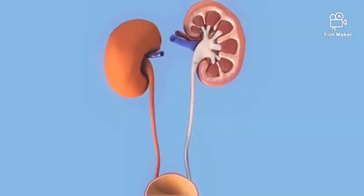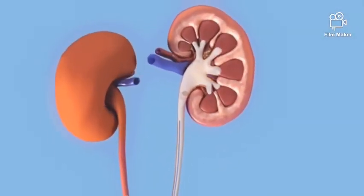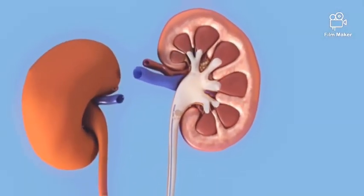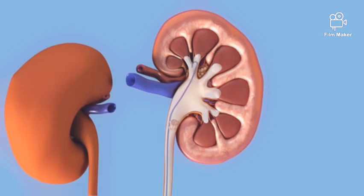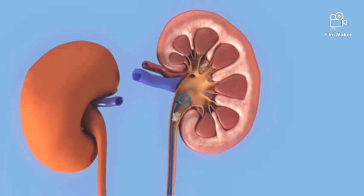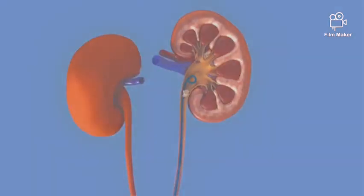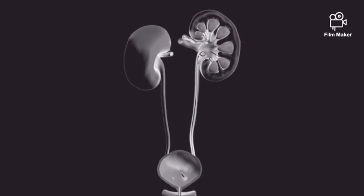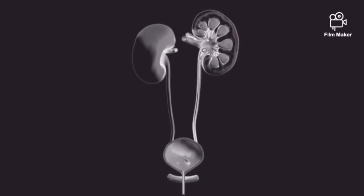A so-called guide wire is introduced through the camera into the kidney. The double J stent is inserted over this guide wire. J-shaped curls are present at both ends of the stent to hold the tube in place. X-ray is used to check that both ends are in place in the kidney and the bladder.